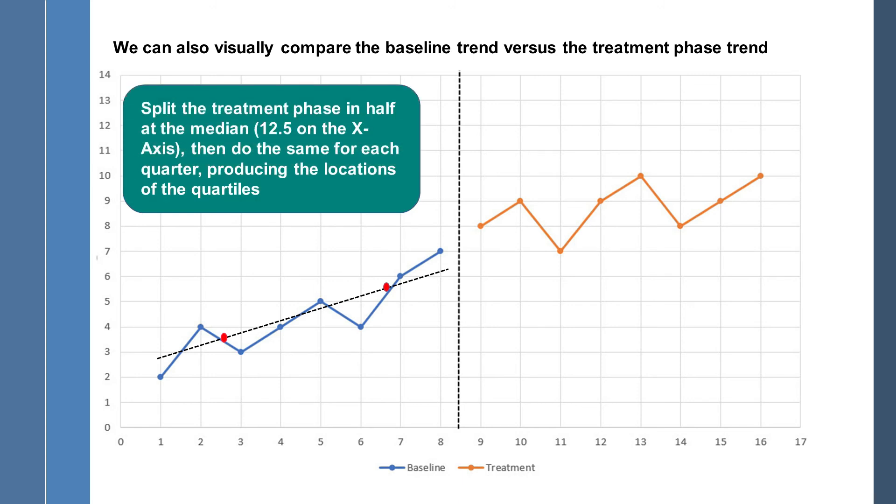So we split the treatment phase in half at the median, and that is 12.5 on the x-axis. So that half of the scores fall below, half of the treatment phase I should say, scores fall below and half fall above that median. And then for each of the top half and bottom half of the treatment phase, we're going to cut those in half again, and in that way we create quartiles. There's one of them and there's the other.